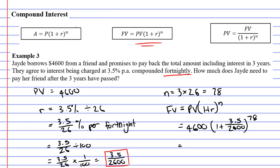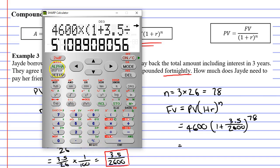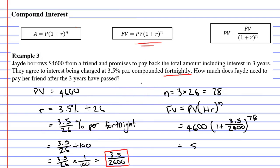All we need to do now is use our calculator to work it out. 4,600 times bracket 1 plus 3.5 - I'm going to use divide instead of the fraction button, it's perfectly fine to do that - divided by 2600, close our brackets and put it to the power of 78. Equals, and we get $5,108.91.